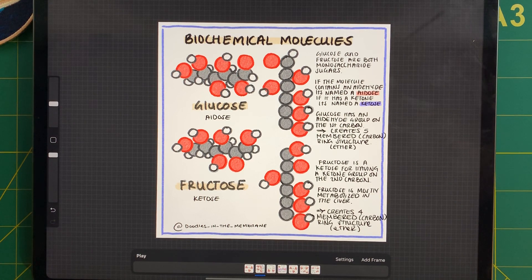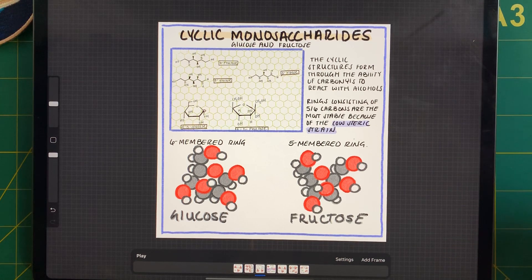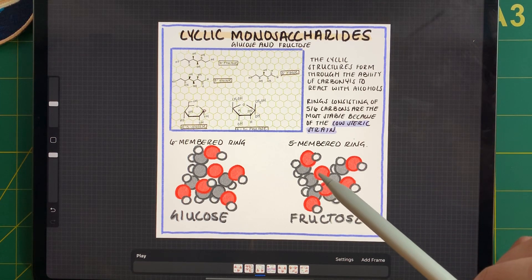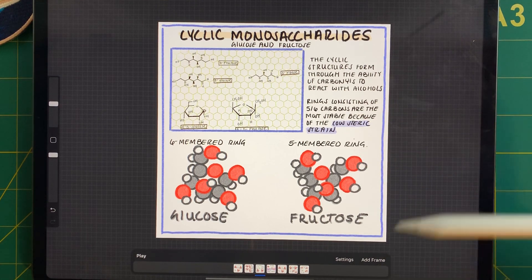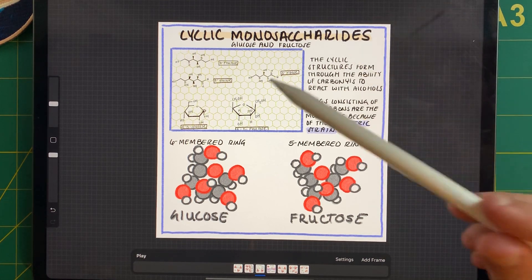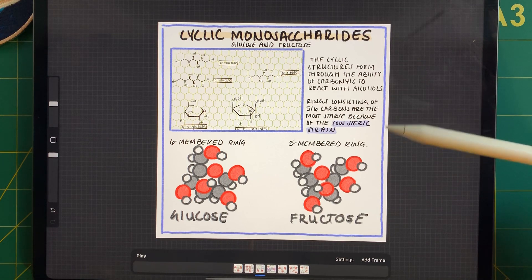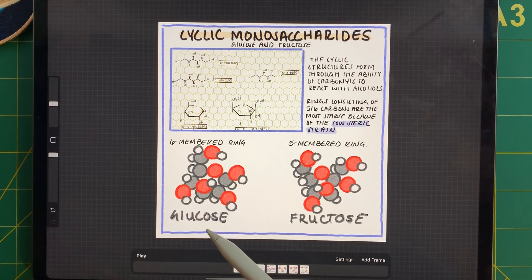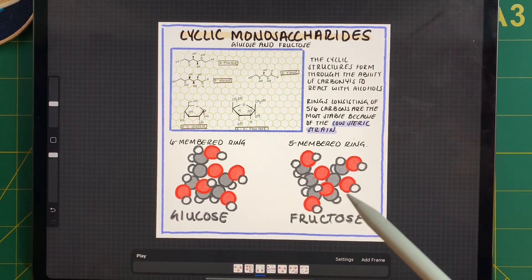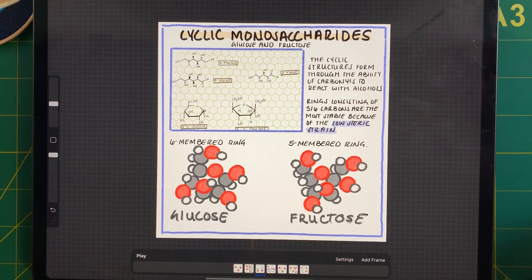So in this state, they're in their linear form, but we can have them in their cyclic form. Now, the reason why these molecules form cyclic structures is because we have a carbonyl and we have an alcohol on this molecule. Those two functional groups can react with one another. And in the case for glucose, we're going to form a six-membered ring. In the case for fructose, we're going to form a five-membered ring.